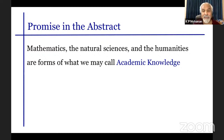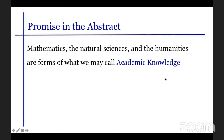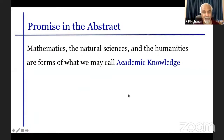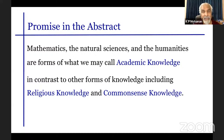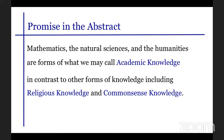Mathematics, the natural sciences, and the human sciences are forms of what we may call academic knowledge. In contrast to other forms of knowledge, including religious knowledge and common sense knowledge, we are going to contrast academic knowledge and common sense knowledge.